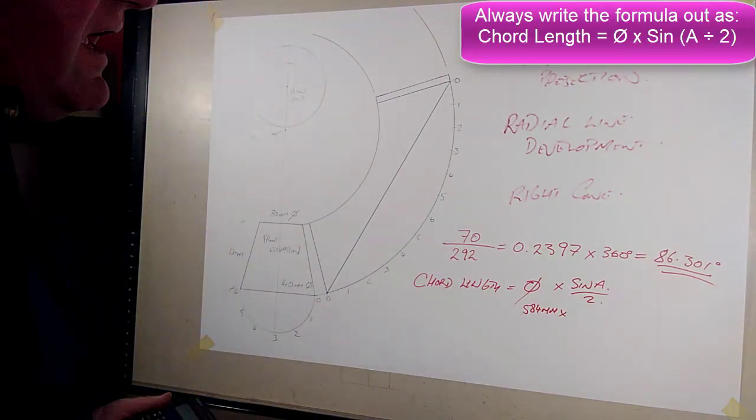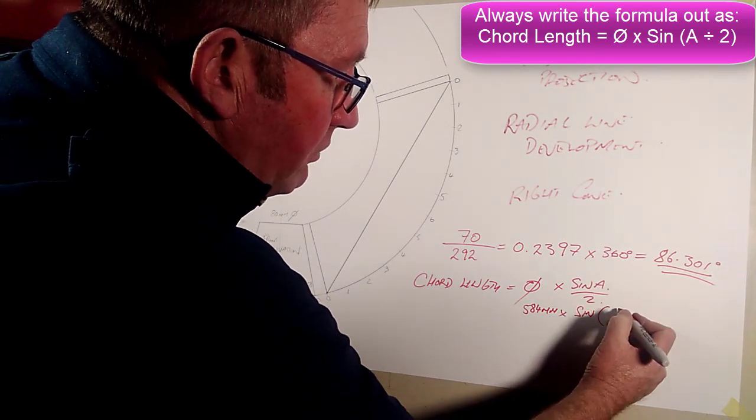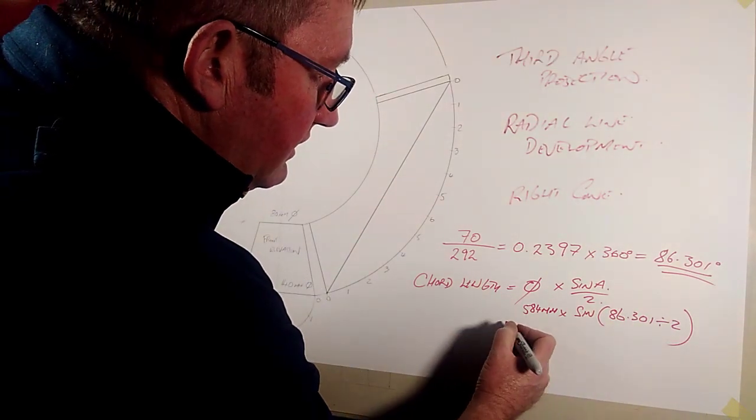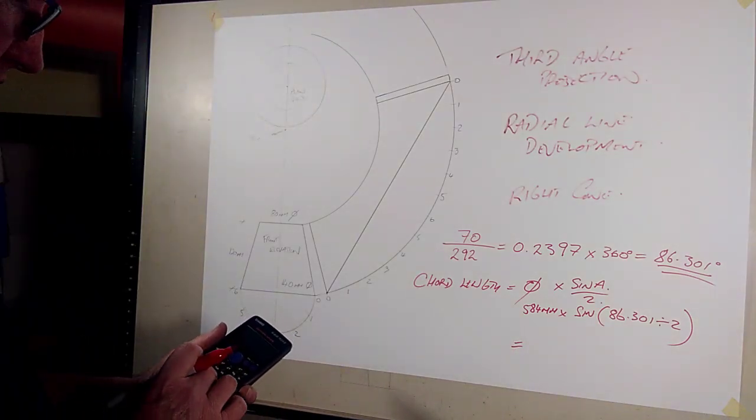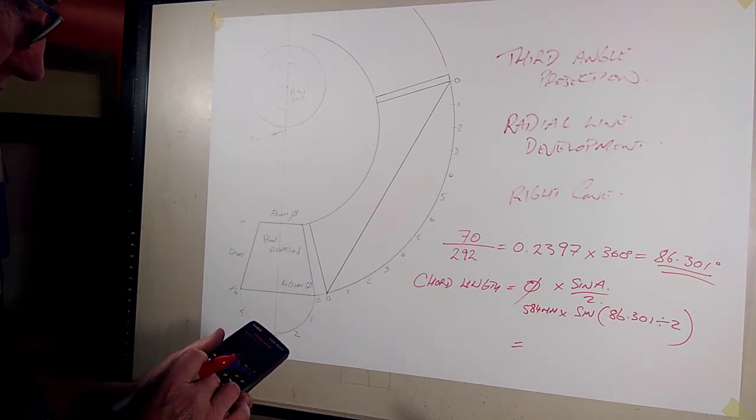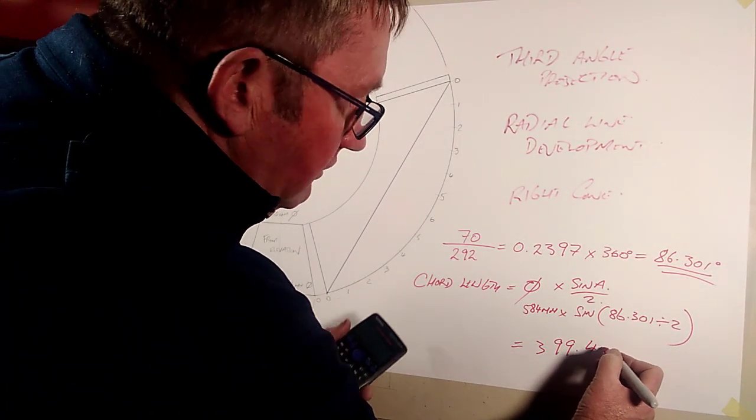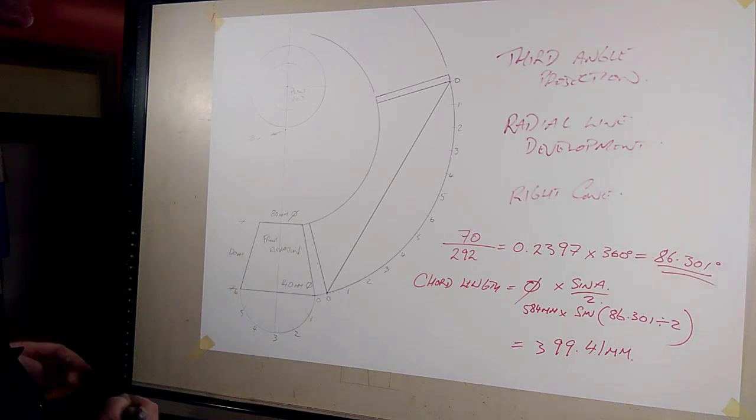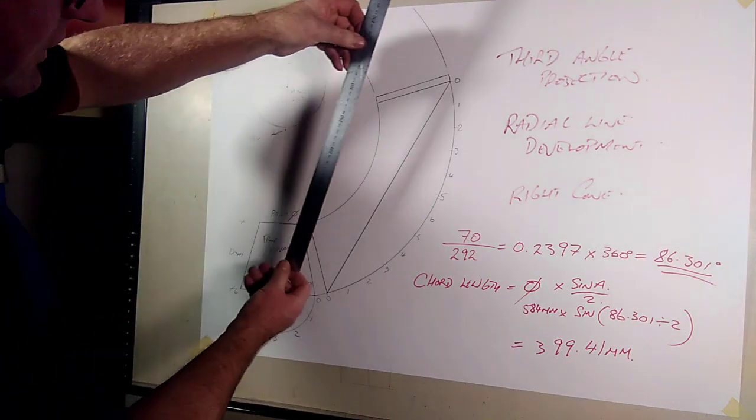Times sine a over 2. So how that writes out on the calculator is you're going to push the sine figure, it'll open a bracket, you push 86.301 divided by 2, close the bracket, and that will give you the chord length. So 584 times sine open bracket 86.301 divided by 2, close bracket equals I get 399.4. We'll go to those two positions. Let's face it, in a sheet metal shop if I was marking that out I would just round it to 399mm, wouldn't go to the 0.41.